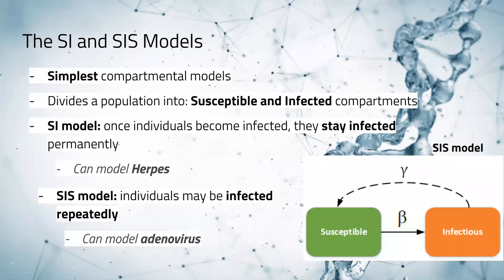The SI and SIS models are the simplest kinds of compartmental models. They divide a population into a susceptible and an infected group. In the SI model, once individuals become infected, they stay infected for the rest of their lives — this is good for modeling certain diseases like some STDs or herpes. In the SIS model, individuals may become infected repeatedly, moving back from the infectious group to the susceptible group. It's good for modeling common colds like the adenovirus.